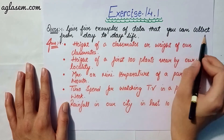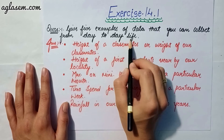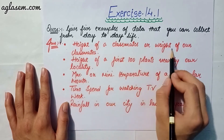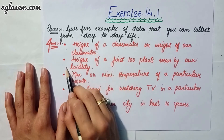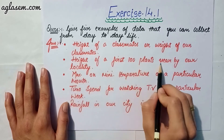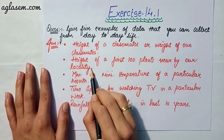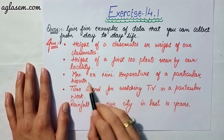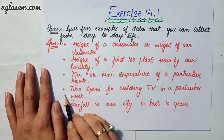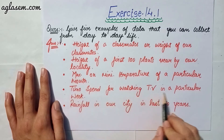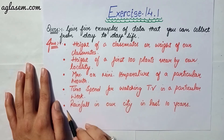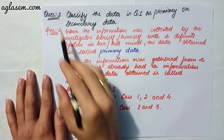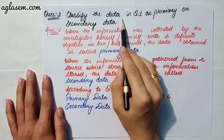The answer is: number one, height or weight of our classmates. Second, height of the first hundred plants nearby our locality. Third, maximum or minimum temperature of a particular month. Fourth, time spent watching TV in a particular week. Fifth, rainfall in a city in the last 10 years.